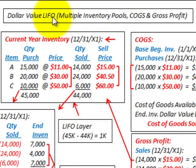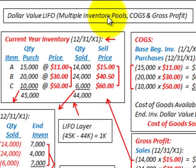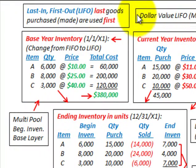What we're going to be looking at here is a dollar value LIFO method for valuating our inventory. We're going to be looking at multiple inventory pools here to determine our cost of goods sold and gross profit on some inventory that we sell for the period. We'll be dividing it up into inventory pools. For this LIFO method — that's last in, first out — the last goods purchased or made are used first.